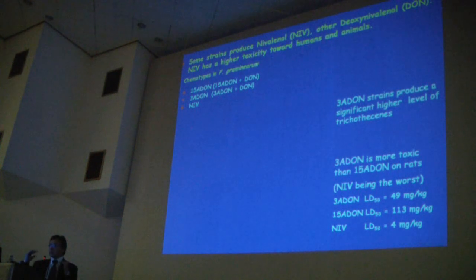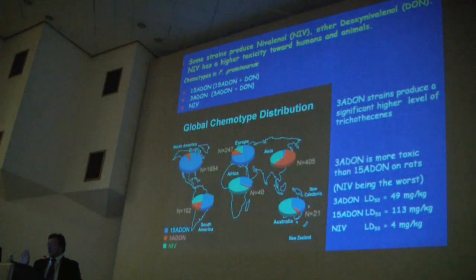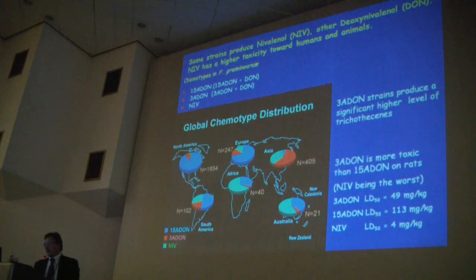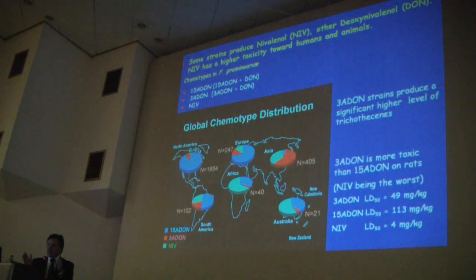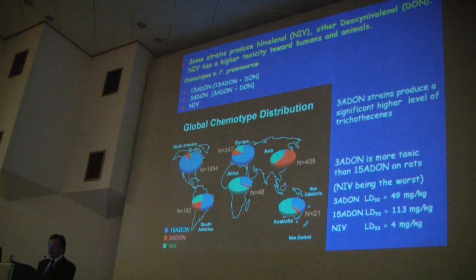It is important at a pan-European scale to establish which chemotypes are most prevalent according to different geographical areas. It is also important to note that 3-acetyl deoxynivalenol is more toxic than 15-acetyl deoxynivalenol, and nivalenol is the most toxic. Therefore, screening for the different chemotypes within the Fusarium population is essential for correct risk assessment.